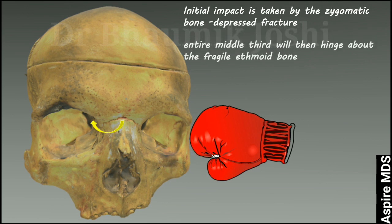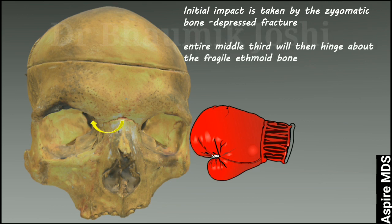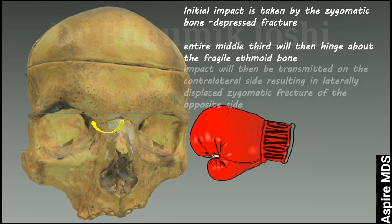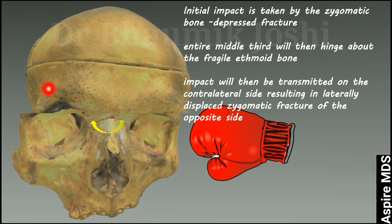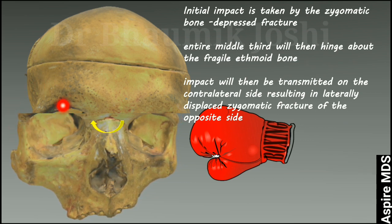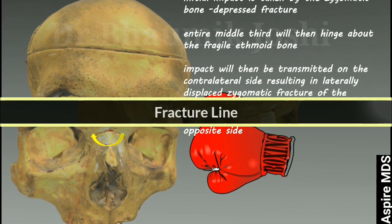The entire middle third will hinge about the fragile ethmoid bone. As the impact is transmitted to the opposite side, we can see a laterally displaced zygomatic fracture. So at the site of impact we have a depressed zygomatic fracture, and on the opposite side we have a laterally displaced zygomatic fracture on the contralateral side.